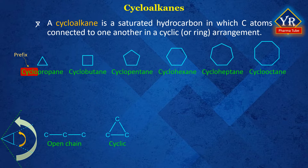Line-angle formulas are generally used to represent cycloalkane structures. The line-angle formula for cyclopropane is a triangle, that for cyclobutane a square, that for cyclopentane a pentagon, and that for cyclohexane a hexagon and so on. The simplest cycloalkane is cyclopropane, which contains a cyclic arrangement of three carbon atoms. Similarly, a cyclohexane consists of six carbon atoms in a ring structure.